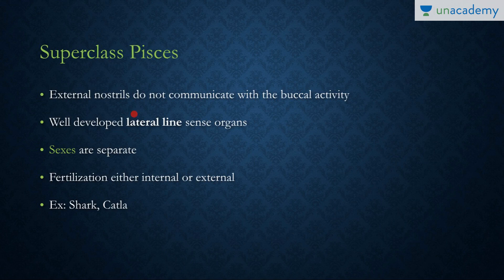The external nostrils do not communicate with the buccal cavity, because air entry is not taken through the nostrils in fishes. They have well-developed lateral line sense organs, which help in proprioception and maintaining the position of the body.